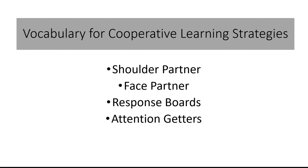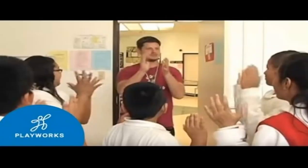Here is some vocabulary for cooperative learning strategies. A shoulder partner is the person to your side you talk to. A face partner is the person across from you for discussion. Response boards are typically whiteboards students use to show answers all at one time. Attention getters are sounds, claps, or cheers used to gather the class's attention.